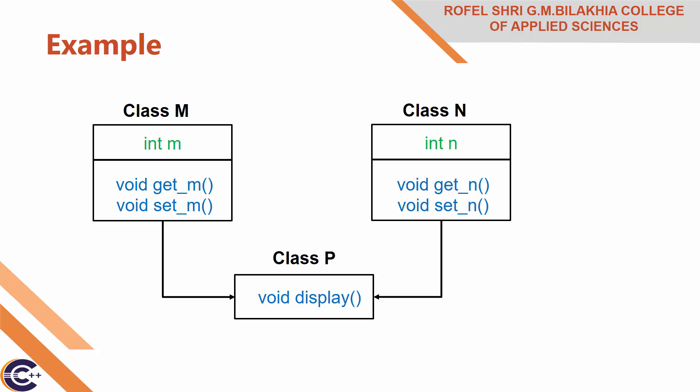Let me explain one example. First, take a class — base class M — in that a protected member integer M, and two public member functions: void getM and void setM. getM is used to accept the value of variable M, and setM will display the value of variable M. Similarly, there is another base class, class N.